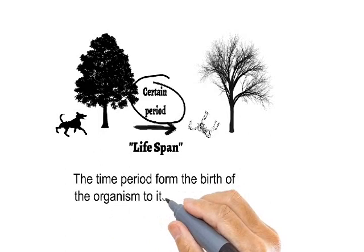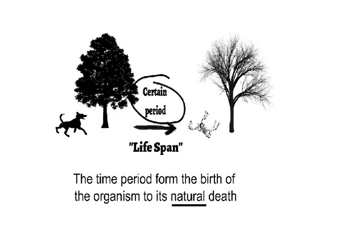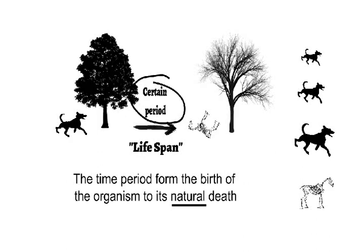Remember, this death should be a natural one, because sometimes organisms may die due to disease or one organism may eat another. These are not examples of natural death. In natural death, the organism gets older and weaker and then dies without any accident or being eaten by other organisms.